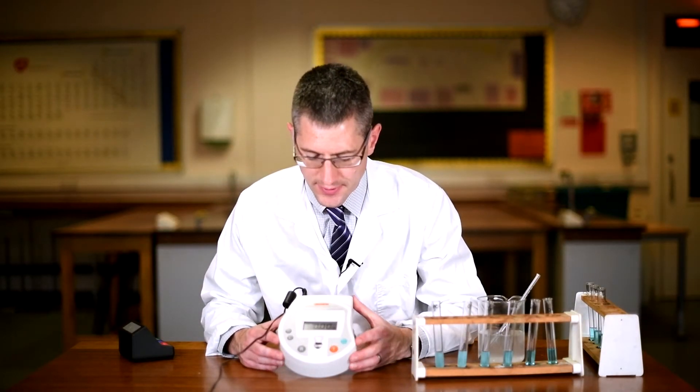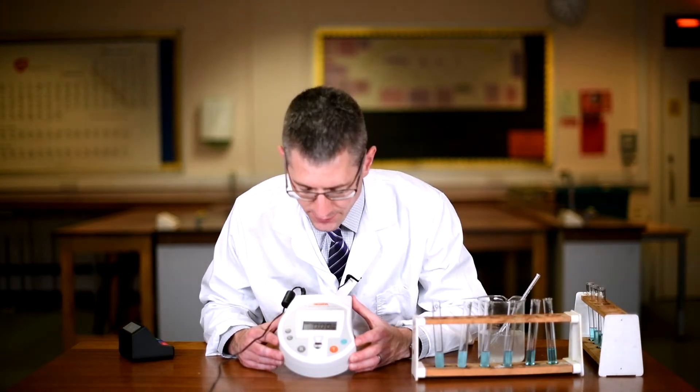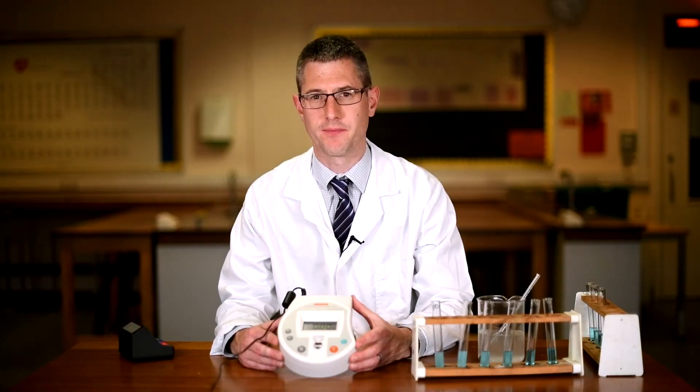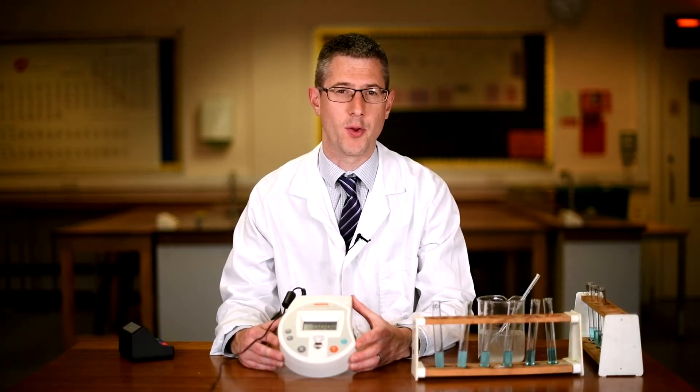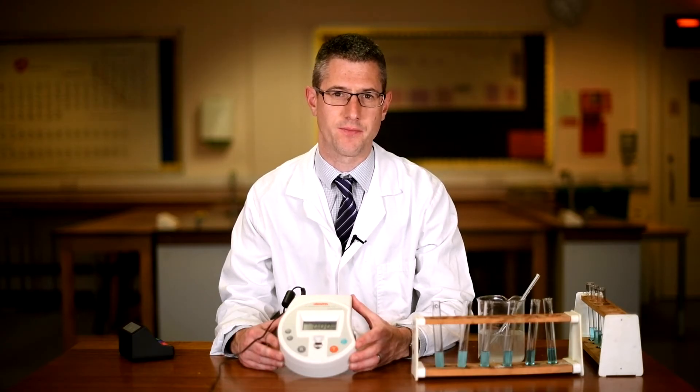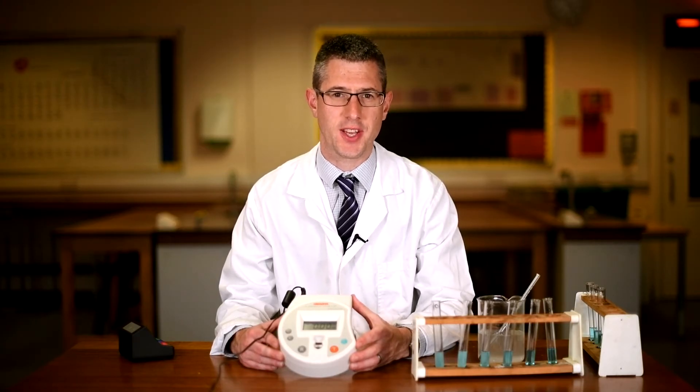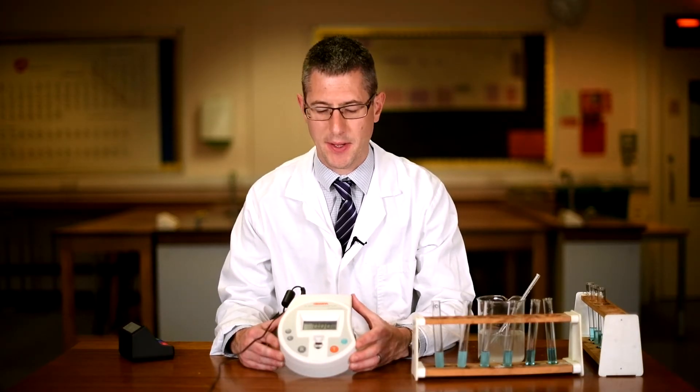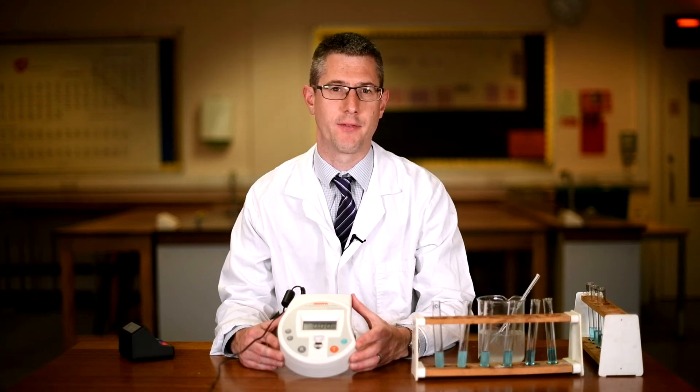Now I've set this colorimeter to a red filter. The reason I've chosen a red filter is that we have a blue solution. Blue solutions are blue because they're absorbing all other wavelengths of light, all other colors of light. If we want to see a change in absorbance reading, we need to choose a filter of the complementary color. In this case, the best color filter I had was a red filter.